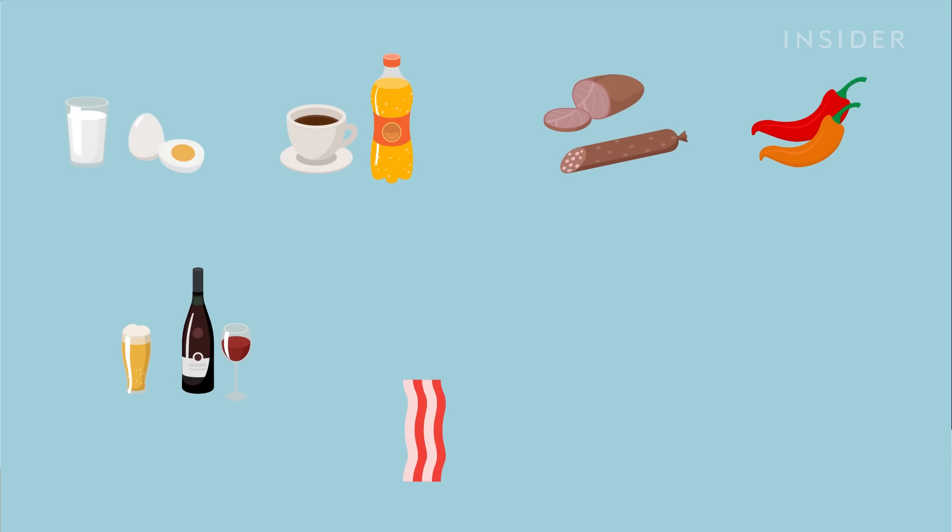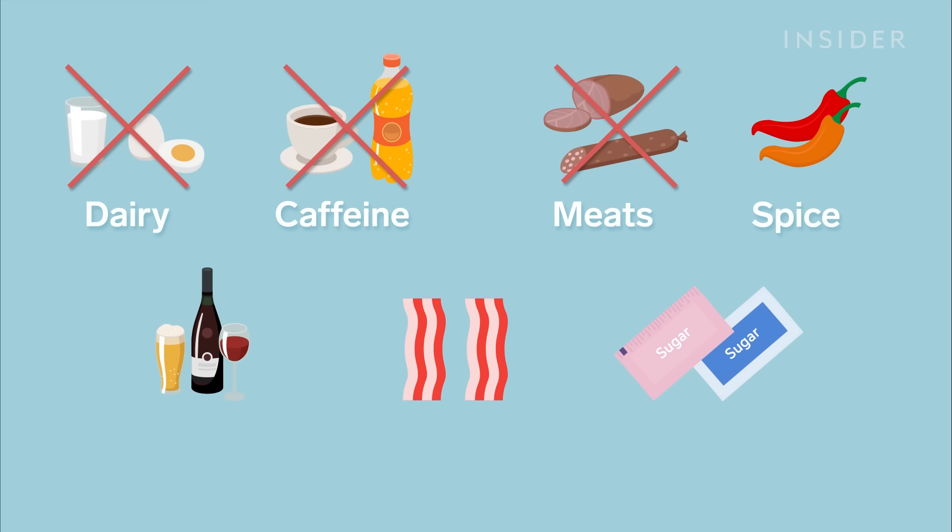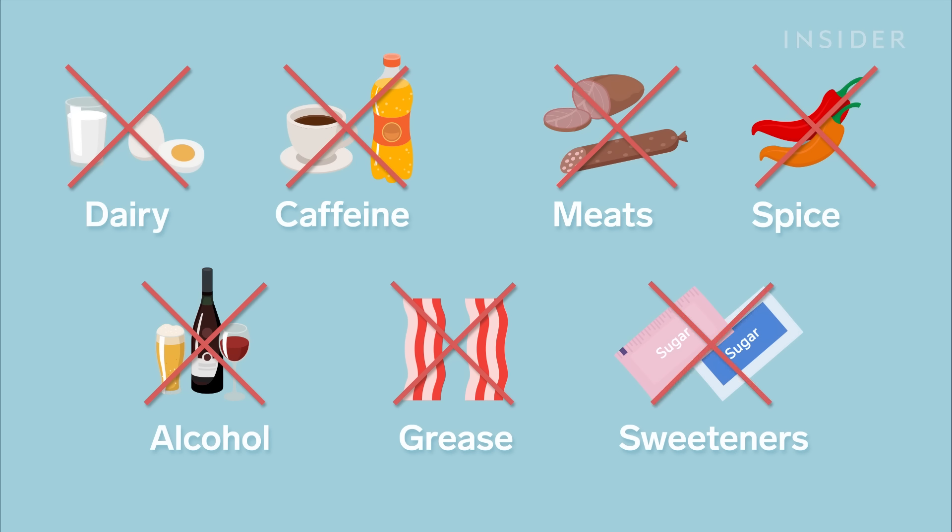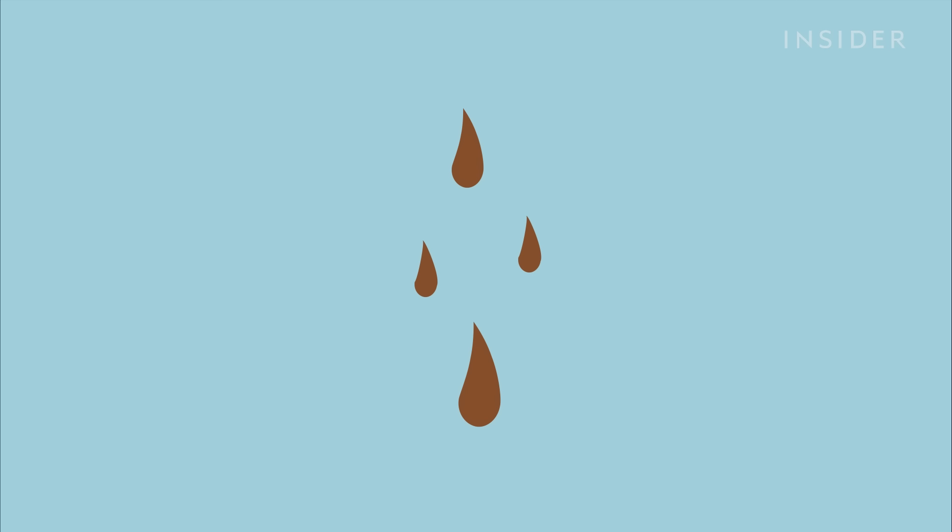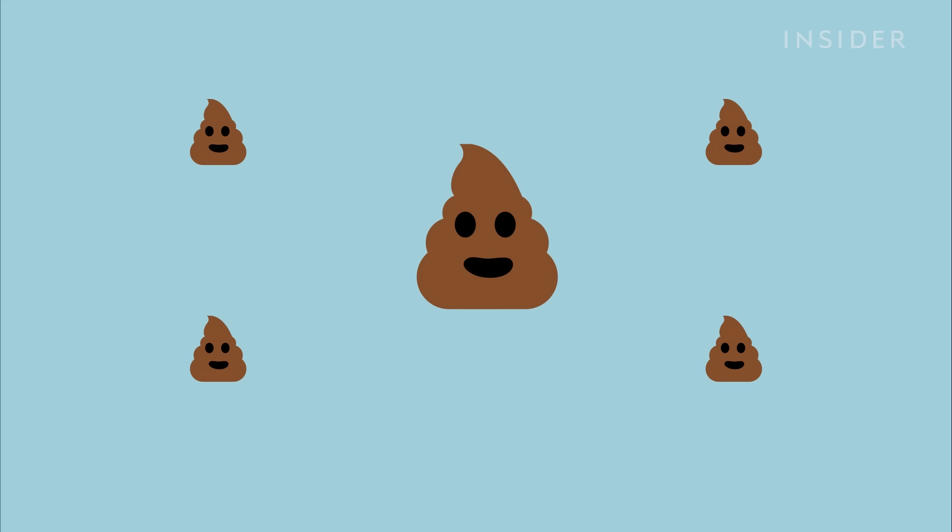And if adding stuff to your diet doesn't help, maybe try taking stuff away. Dairy, caffeine, meats, spicy foods, alcohol, grease, certain fruits, and artificial sweeteners have all been known to cause diarrhea. Cutting all or some of that stuff could help relieve those bowel control issues.